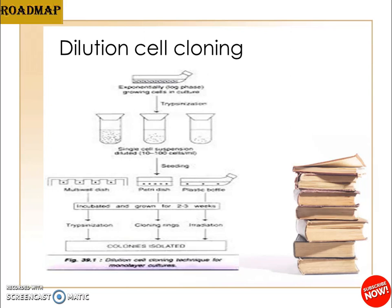Dilution cloning is carried out in different stages. I would request you to see the diagram as I explain for better conceptual understanding. First, trypsinization of cells takes place at the log phase to produce single cell suspensions. Second, dilution of the cells takes place to about 10 to 100 cells per ml. Third, the cells are seeded into multiple dishes, petri dishes, or plastic bottles.